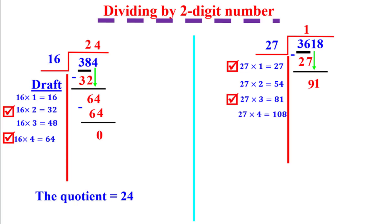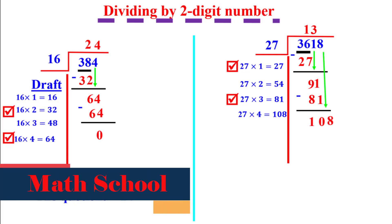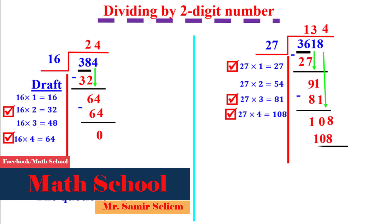We will try 3: 3 times 27 equals 81. Subtract — it will be 10. Now bring down 8, giving us 108. Try 4: 4 times 27 equals 108. Write a line and subtract — it will be 0.